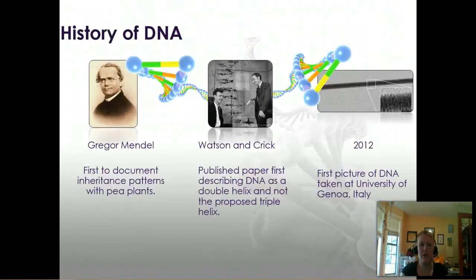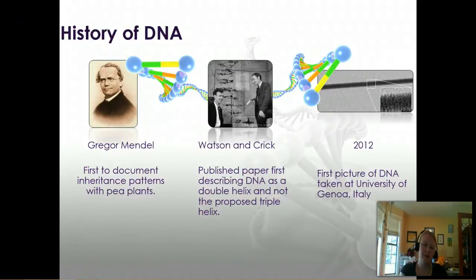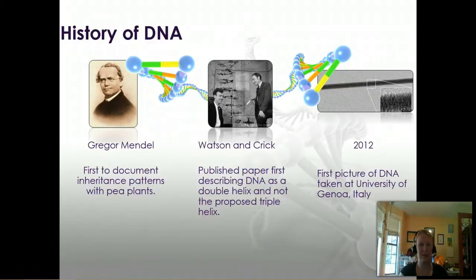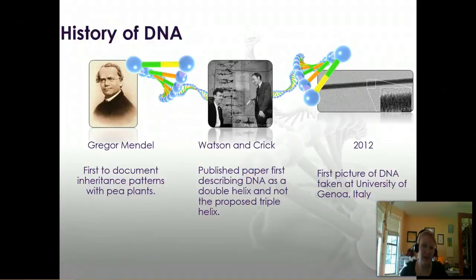Let's talk a little bit about the history of DNA. The first to really document inheritance patterns is Gregor Mendel. We knew for a while that people look like their parents and siblings looked similar, and Mendel was the first to really work out how inheritance patterns work, at least the most basic ones. But he didn't know that DNA was what passed it on — he had no sense of what was passing it on, just that something was being passed from parent to offspring.